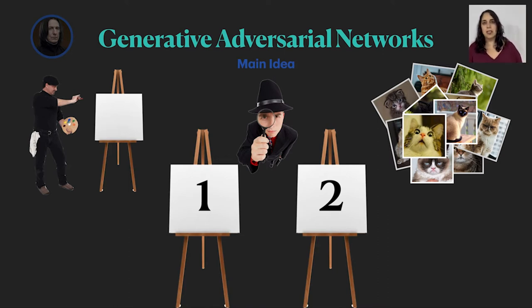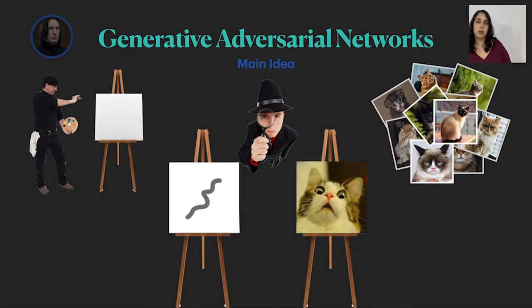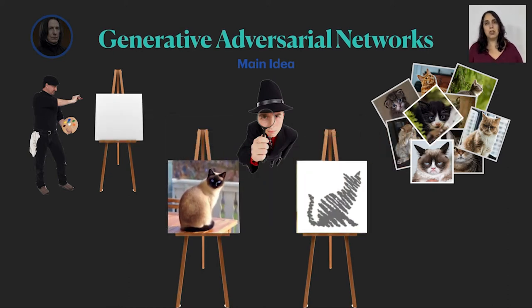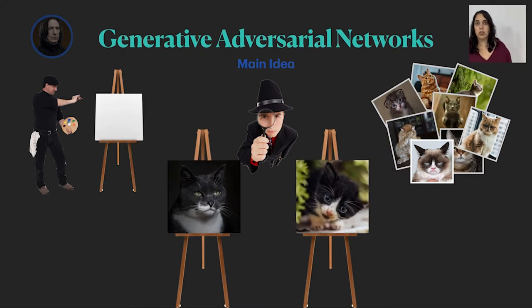In the beginning the artist doesn't really know how to draw a cat so it's pretty easy for the discriminator to learn what is a real image. This requires the generator to learn and train until it produces something that looks like a cat. Now the discriminator has to work harder to decide but once it learns it raises the bar again for the generator. This goes on until the generator becomes so good that the discriminator can no longer tell the difference.